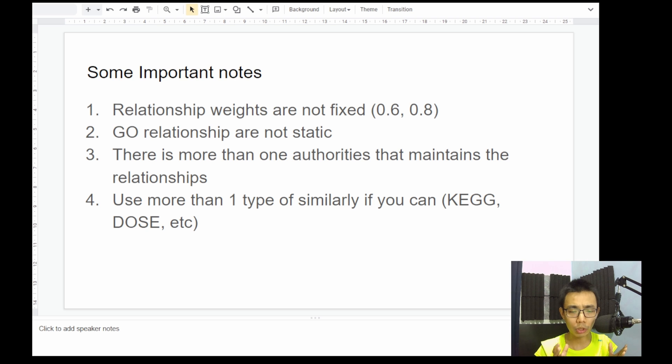And just to actually solve that problem, we always try to run more than one type of similarity if you can, KEGG, DOSE, etc., just to get a more solid replication of what you're doing, and you can tell a stronger story.